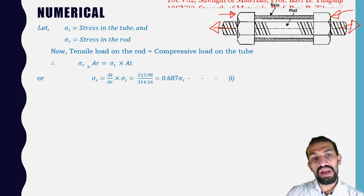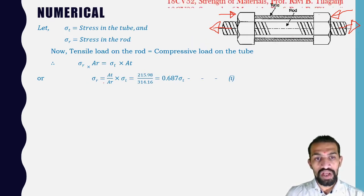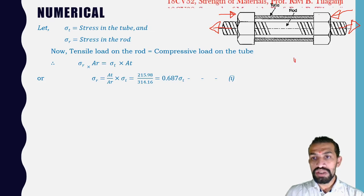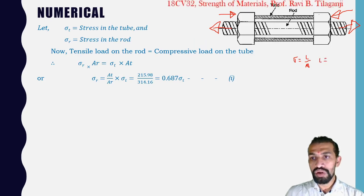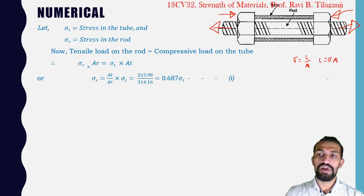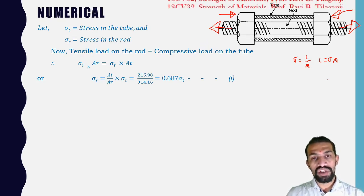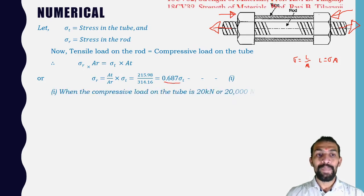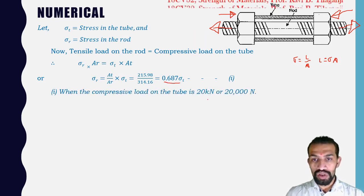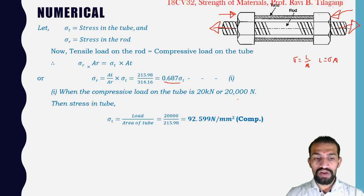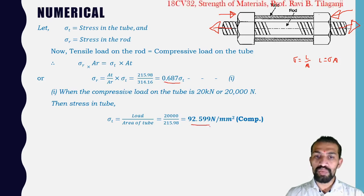Calculating σR in terms of σT: σR = (AT / AR) × σT = (215.98/314.16) × σT = 0.687 σT. When compressive load on tube is 20,000 Newton: σT = PT / AT = 20,000/215.98 = 92.59 N/mm².